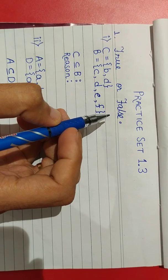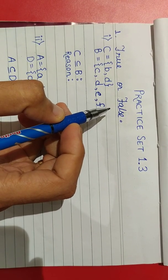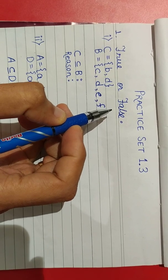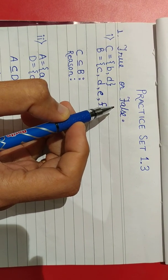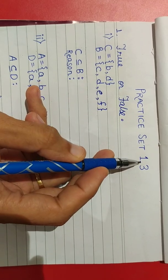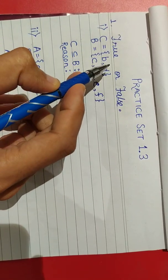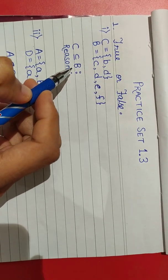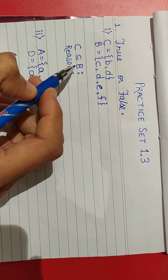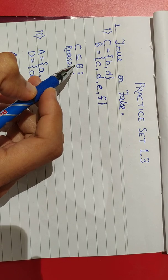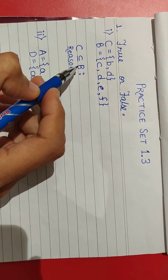Good morning, students. I hope you are enjoying this online learning session. In this video, we will see Practice Set 1.3, question number 1. We have been given statements with the subset relations. We need to prove whether the given statements are true or false. Let's see the first question.